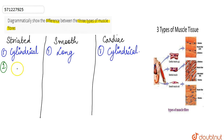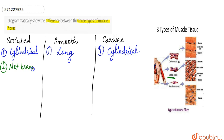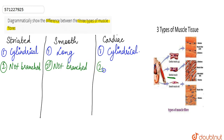Examining the structure further, striated muscles present in our skeletal system are not branched — we cannot see any branching. In the case of smooth muscles, they are also not branched. However, cardiac muscles are branched and we can see branching in them.